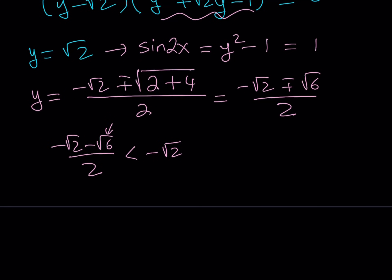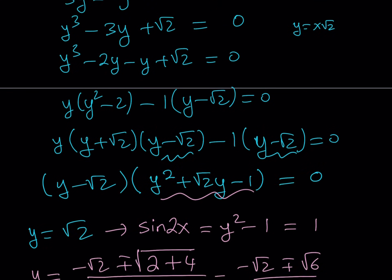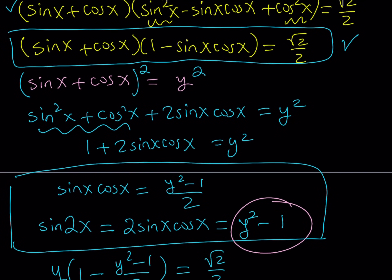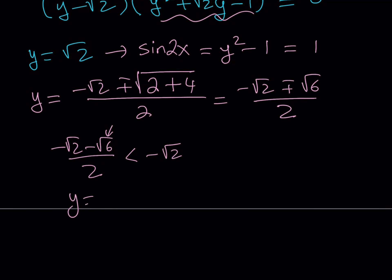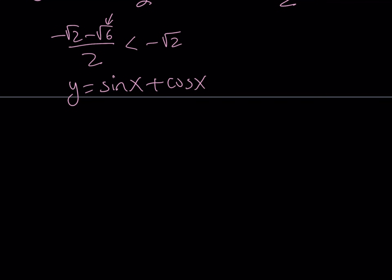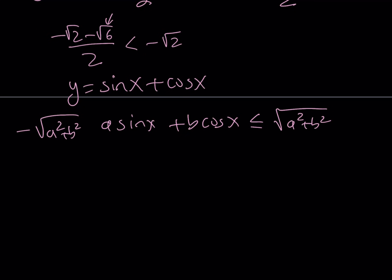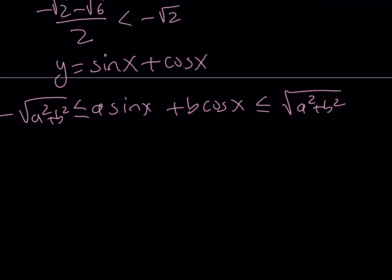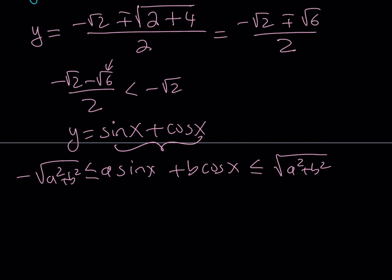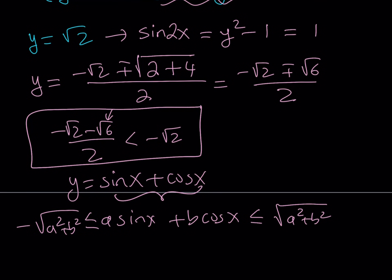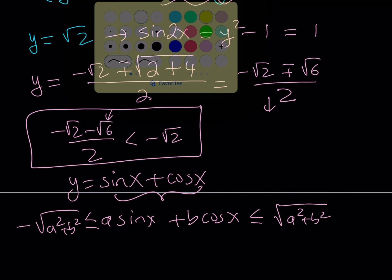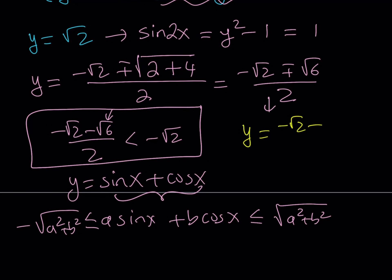Why are we comparing to negative root 2? Because y was sine x plus cosine x, and for a sine x plus b cosine x, the expression must be between the square root of a squared plus b squared and the opposite of that — those are the minimum and maximum values. For this case, the bounds are root 2 and negative root 2. Since one of the values from the quadratic is out of bounds, we don't take that. The only acceptable y value from the quadratic is negative root 2 plus root 6 divided by 2, which can also be written as root 6 minus root 2 over 2.